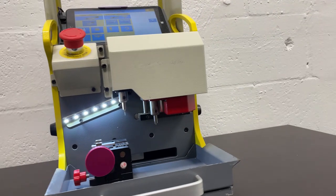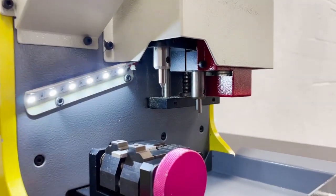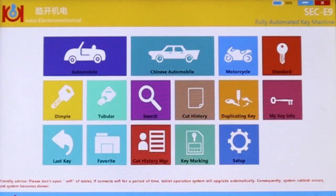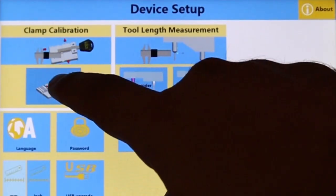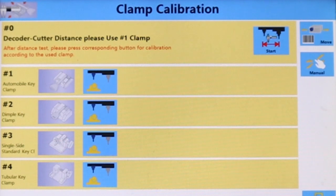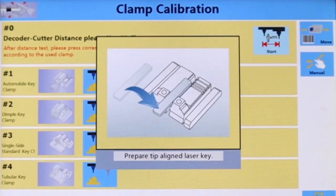After your SCC E9 is all set up and ready to go, you're going to want to calibrate it. The first step at the main menu is to press setup. Under clamp collaboration, press first next. We're going to press start at the number zero calibration because we are using a master clamp.